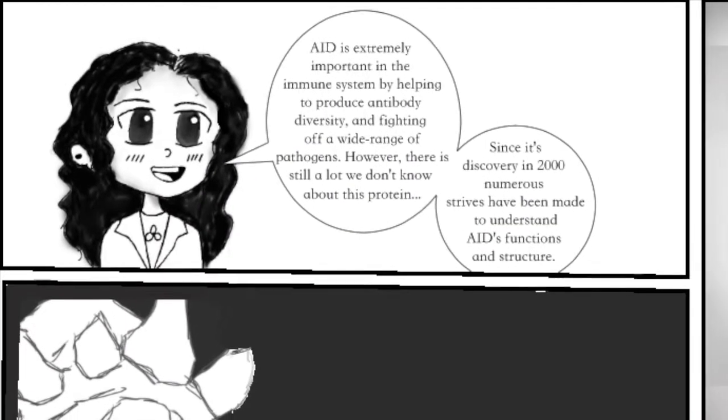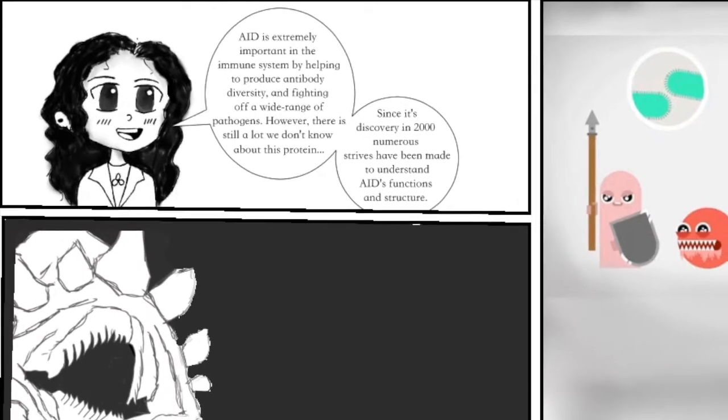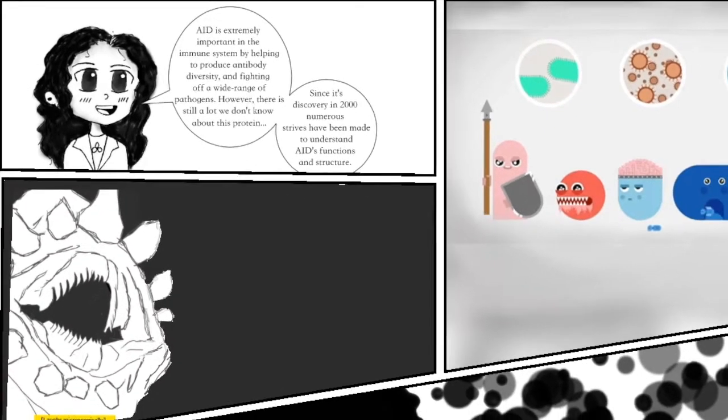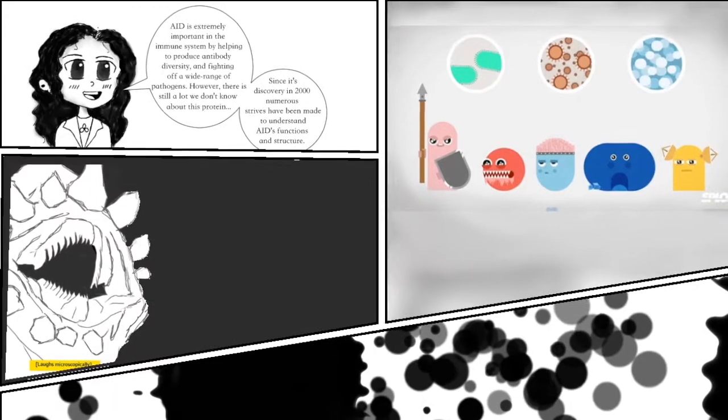AID is extremely important in the immune system by helping to produce antibody diversity and fighting off a wide range of pathogens. However, there is still a lot we don't know about this protein. Since its discovery in 2000, numerous strides have been made to understand AID's function and structure.